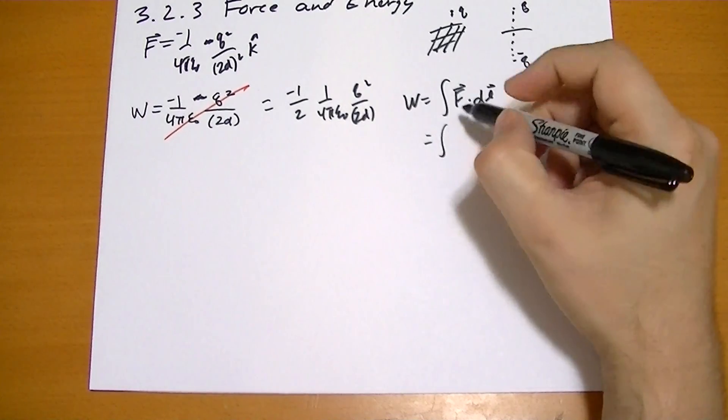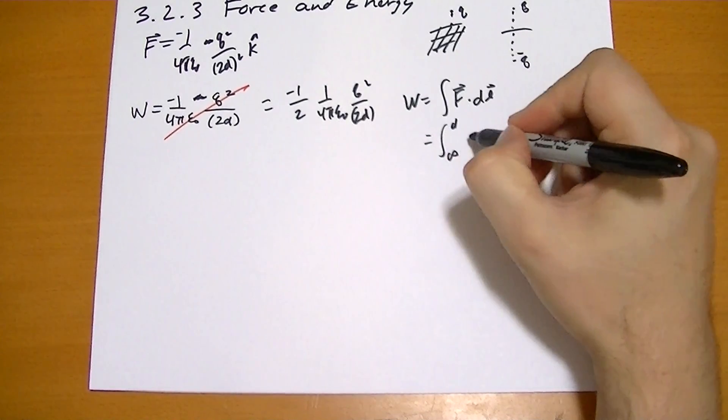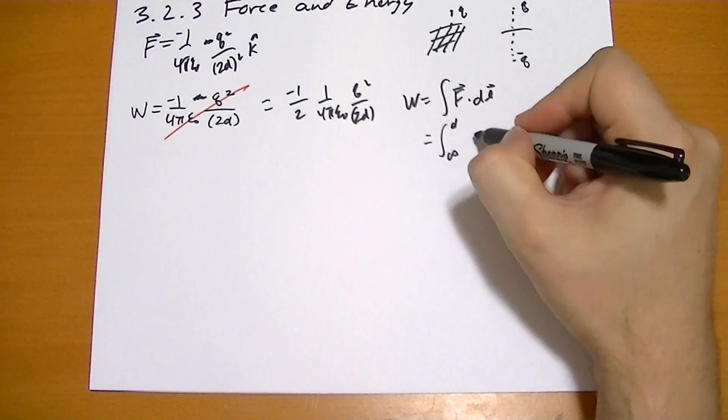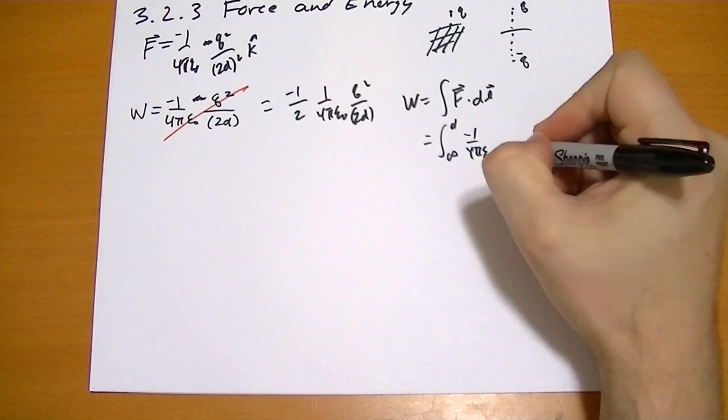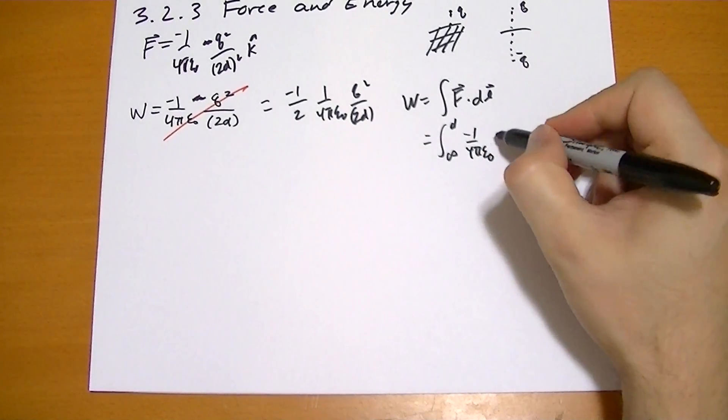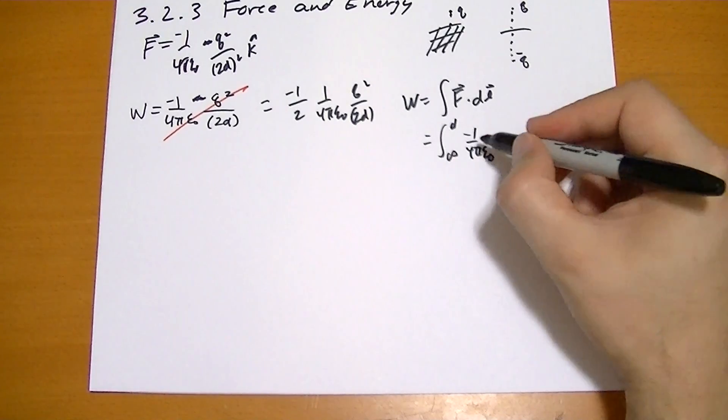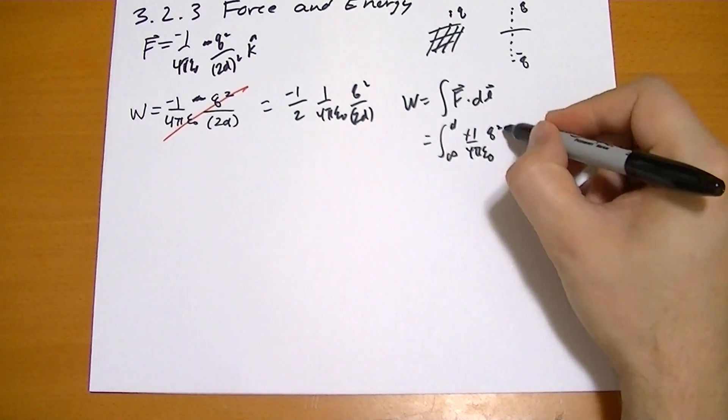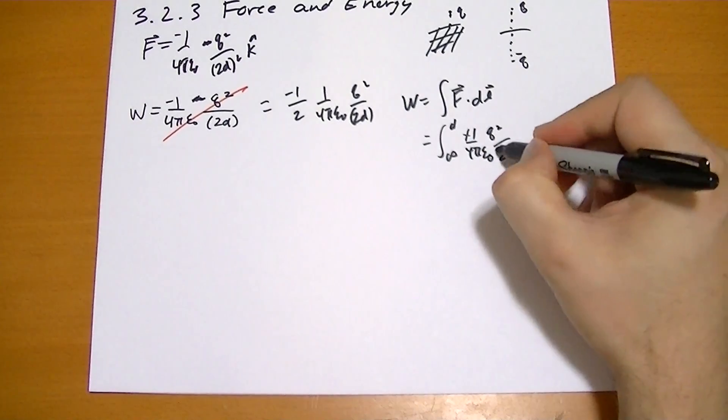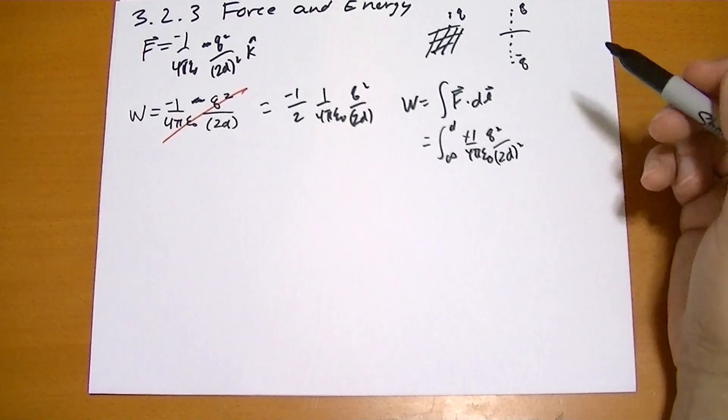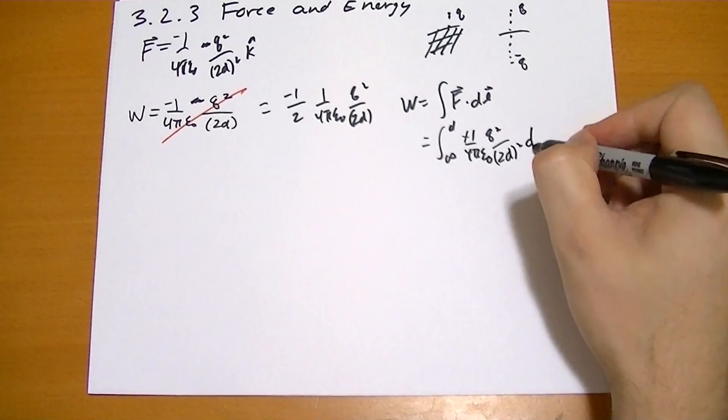So we get the integral of d to infinity of negative 1 over 4 pi epsilon naught times, well, q, the force is, negative q squared, so negative and negative. That makes a positive. Positive q squared over the distance squared, 2d squared, right? And we're going to move in the dz direction.